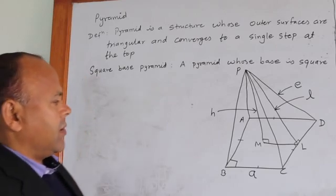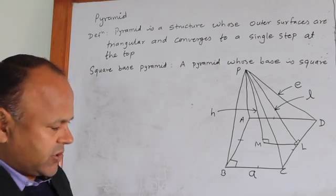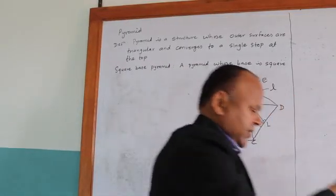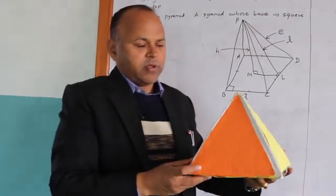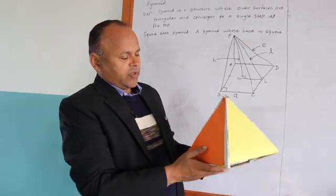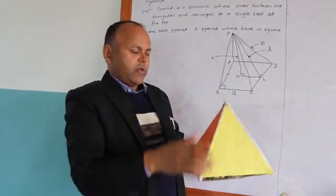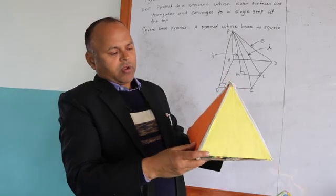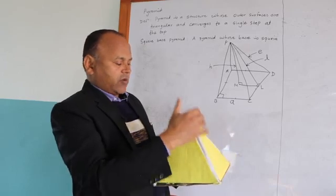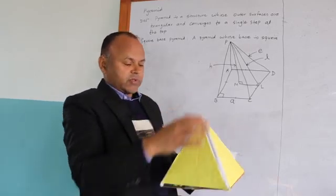These are the parts: A, L, H, and E. Four variables will be there in the pyramid. We may see the pyramid here. This is the square base pyramid. The base is square, and all triangular faces converge to a point at the top. From the definition, outer surfaces are triangular and they converge to a single point. So this is a pyramid.